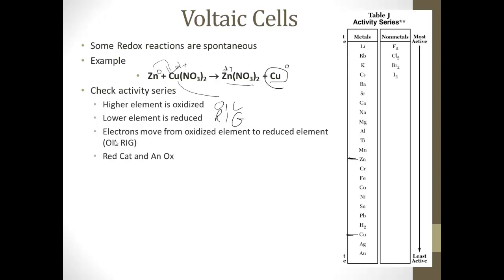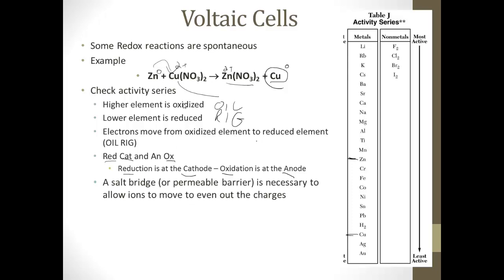The next thing we need to memorize, in addition to OIL RIG, is 'Red Cat and An Ox.' That means reduction is at the cathode and oxidation is at the anode, because we're going to look at the actual setup of a battery. The other thing to memorize is that a salt bridge, or permeable barrier — permeable means stuff can move through it — is necessary to allow ions to move to even out the charges.